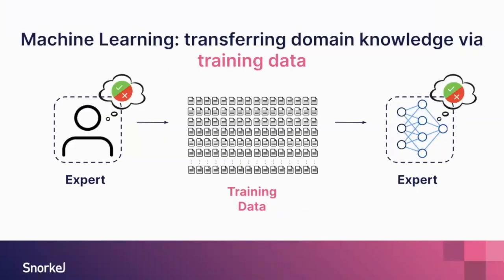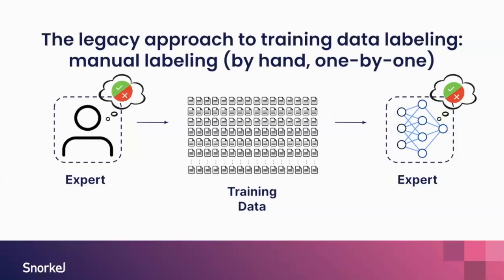For machine learning, we want to transfer domain knowledge via training data. Models can be in the form of neural networks and are explained by parameters, but the way to learn domain knowledge is through training data — given this input, what the output should be, so they can be trained to make that final decision. To get enough training data for the model to learn, we need an expert to go through the data. The legacy approach is to go through the data one by one, by hand.